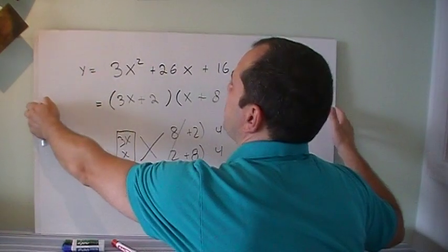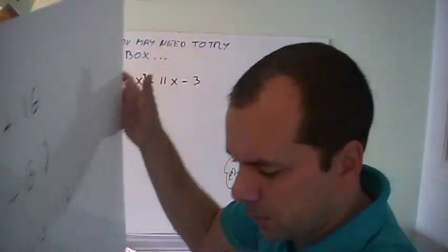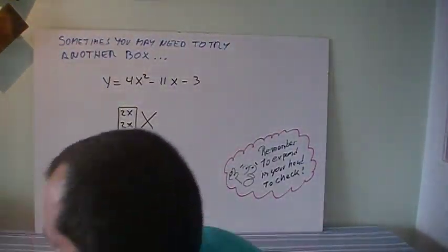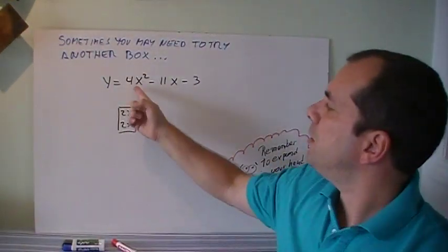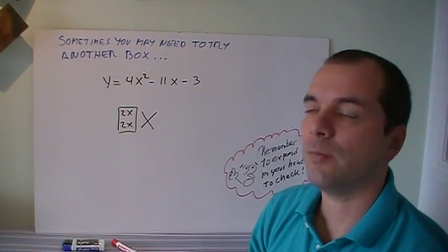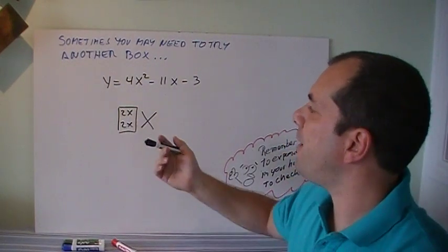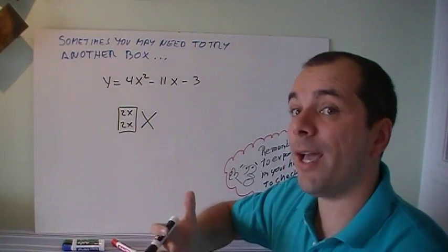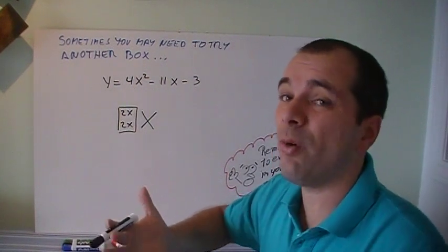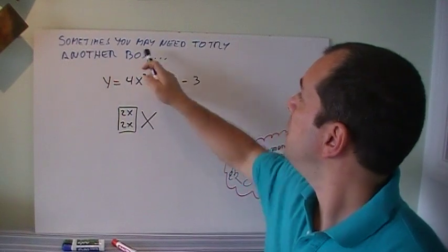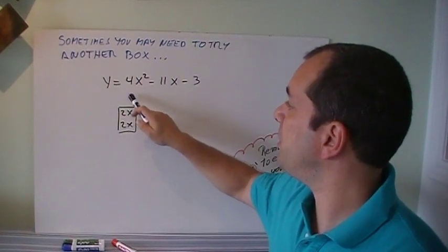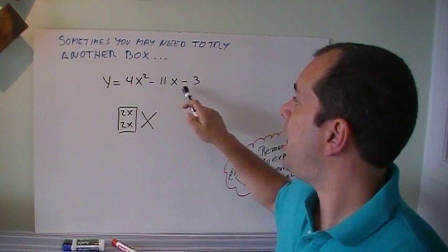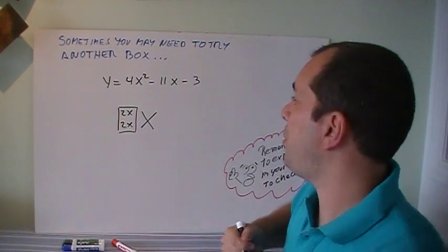Now, for the last case, 4x squared. Well, 4x squared can have two answers for my box. It could be 2x times 2x, or it could be 4x times x. So I may have to try more than once. And this is how we do it. So, this is 2x times 2x, gives me 4x squared.